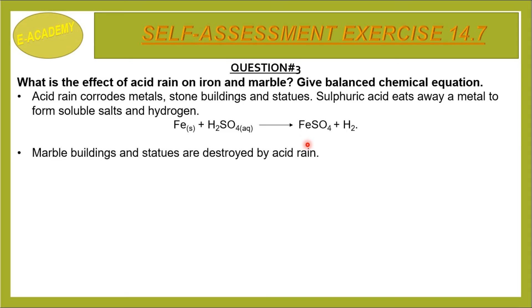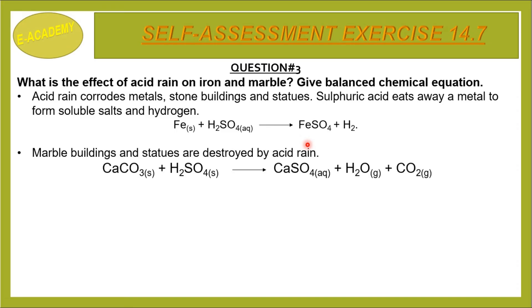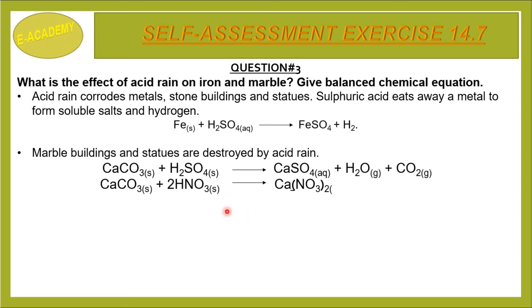The reaction of iron with sulfuric acid: Fe + H2SO4 → FeSO4 + H2. Marble buildings and statues are destroyed by acid rain. CaCO3 + H2SO4 → CaSO4 + H2O + CO2. Calcium carbonate can also react with nitric acid: CaCO3 + 2HNO3 → Ca(NO3)2 + H2O + CO2, producing calcium nitrate, water, and carbon dioxide.